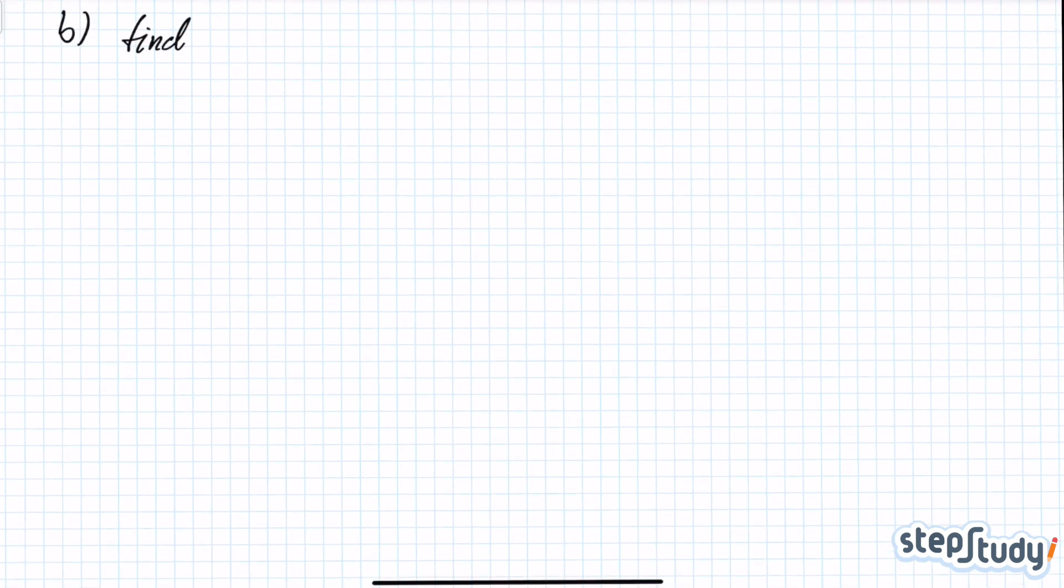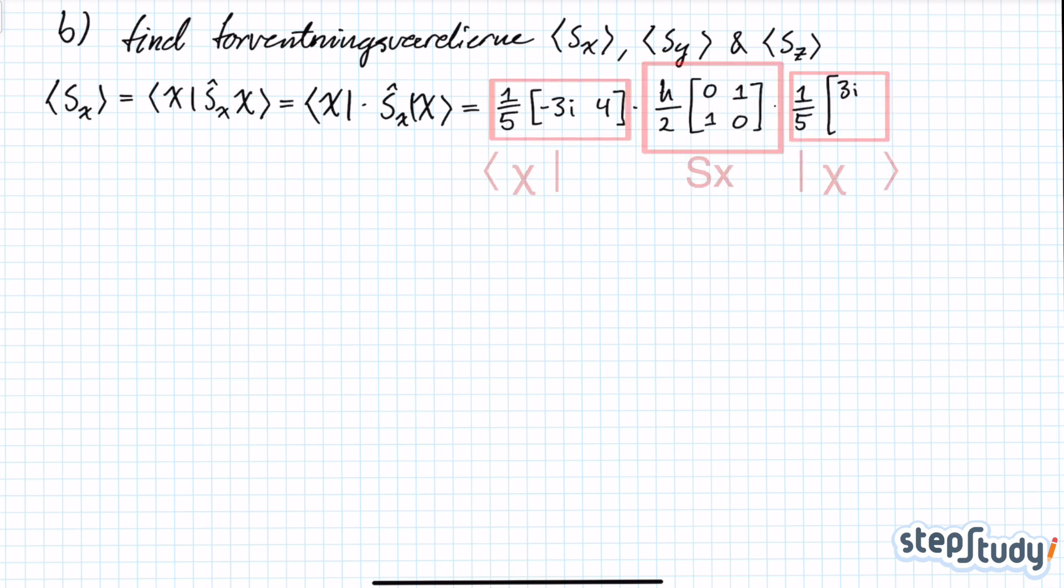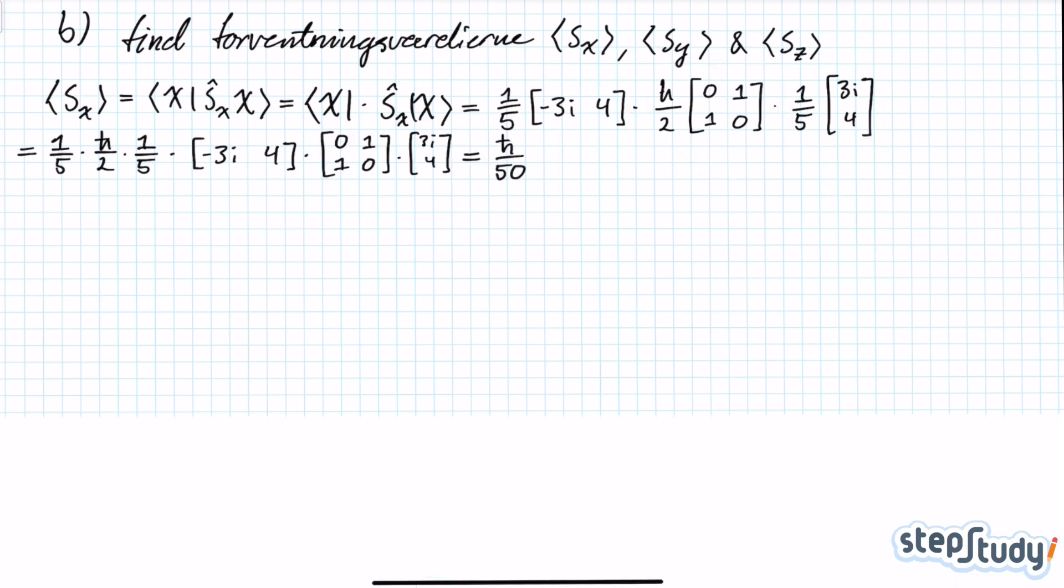Now to find the expected value of spin in the x-direction, you'll need to find the inner product of the chi-dual vector, the chi-dagger vector, with the Sx operator, the spin x operator acting on chi-vector. And you'll find in your book that the Sx operator is just h-bar over 2 times the matrix 0, 1, 1, 0.